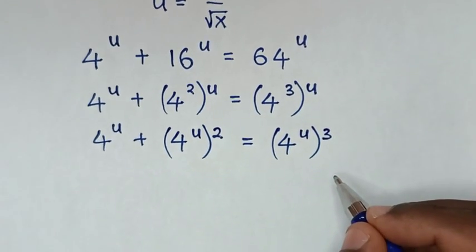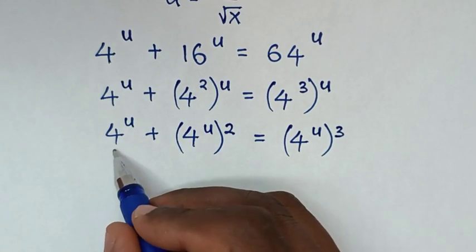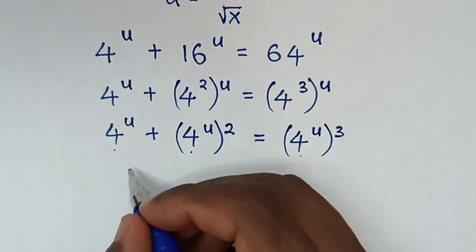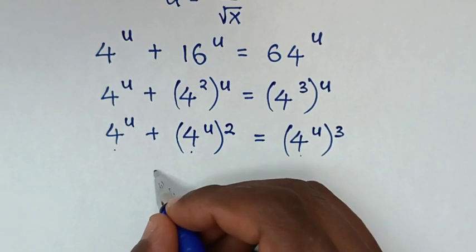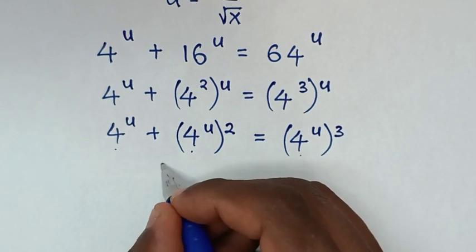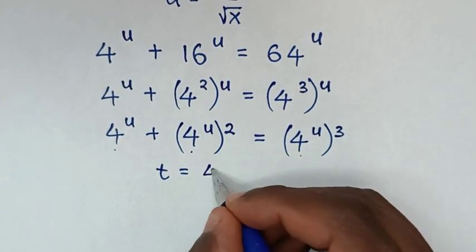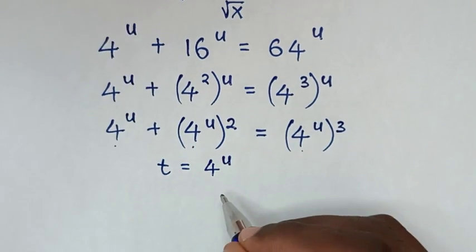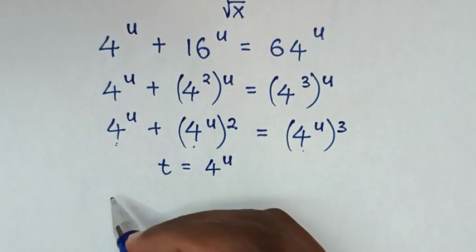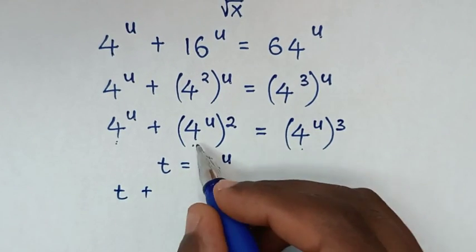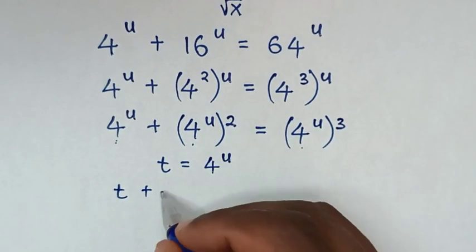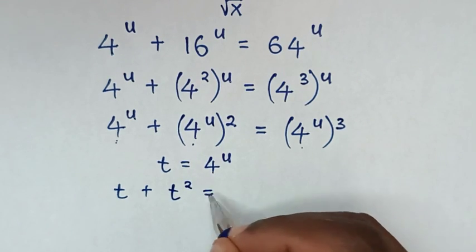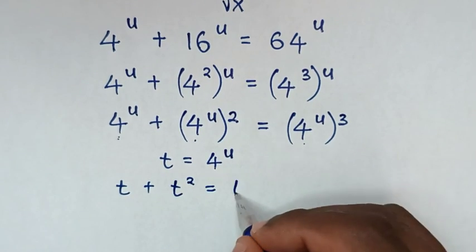In the next step, 4 to the power of u is common. So we let t equal to 4 to the power of u. Then it becomes t plus t squared equals t cubed.